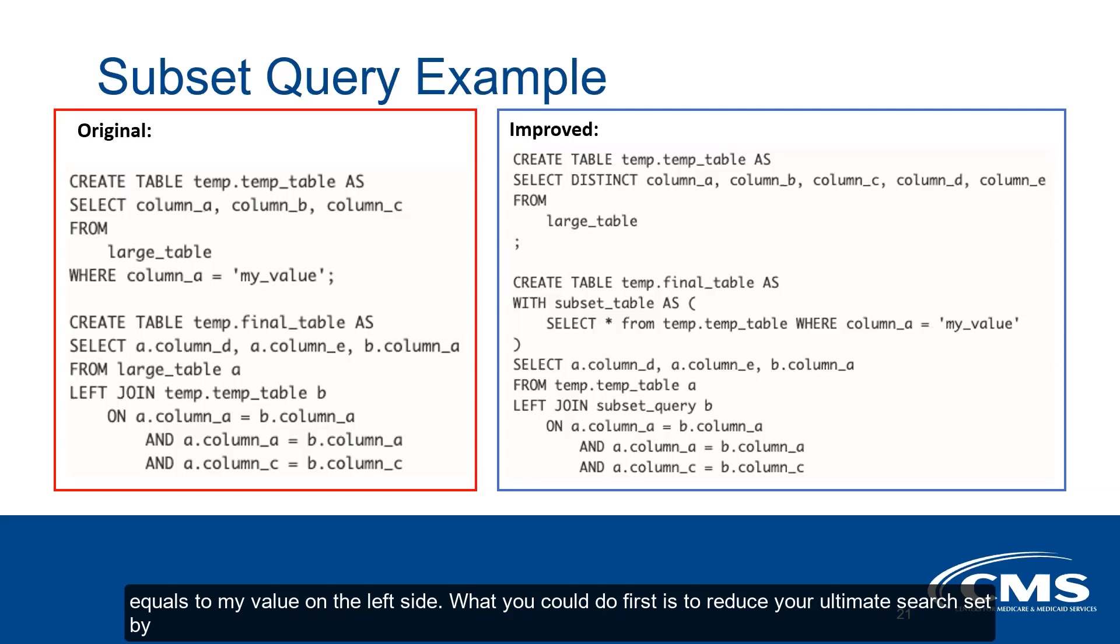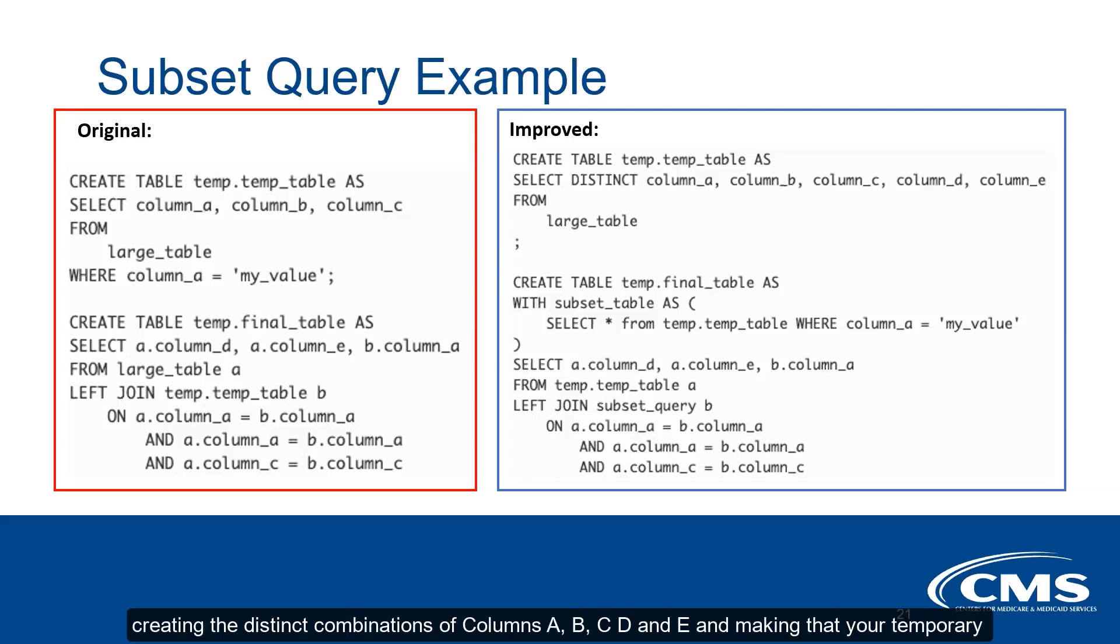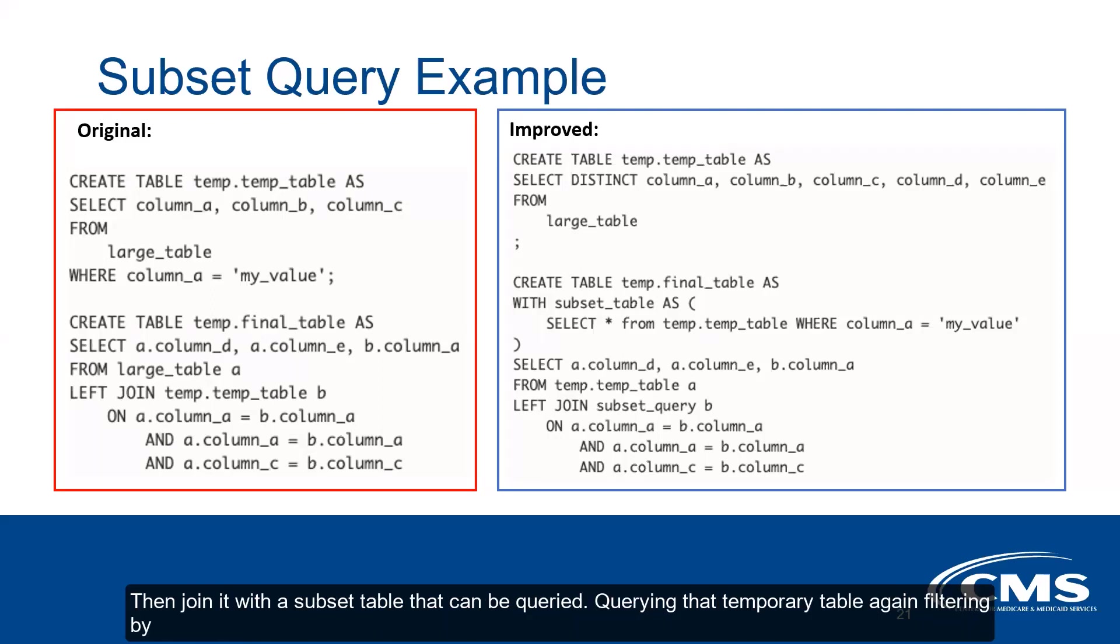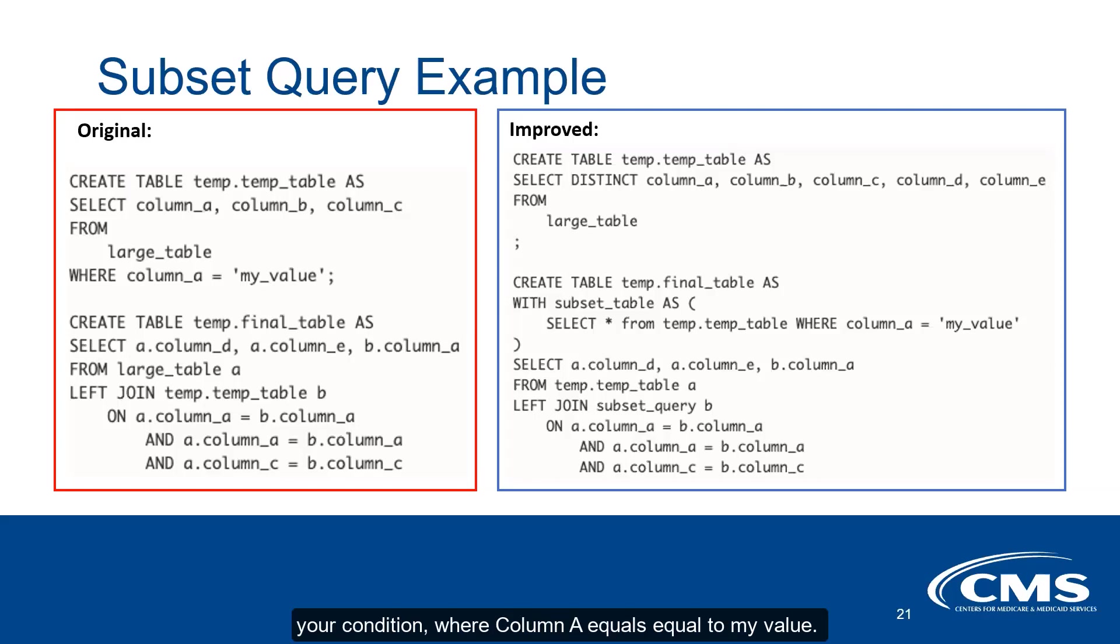By creating the distinct combinations of columns A, B, C, D, and E and making that your temporary table, you create a distinct set of all those columns from the large table. Now, what you can do in that final query is query that temporary table of unique values for those particular columns, and then join it with a subset table—querying that temporary table again, filtering by your condition where column A equals 'my value'. As a result, the query itself is much more efficient because of the significant reduction of records you have to scan through.